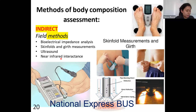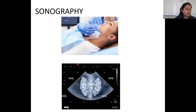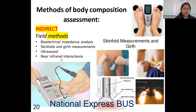Bioelectrical impedance analysis is one of the field procedures to measure body composition based on the rate at which electric current travels through the body. Ultrasound, also called sonography, is a procedure that uses high-frequency waveforms to evaluate the body composition or body parts inside that cannot be seen by the naked eye. We will cover hydrostatic weighing later.